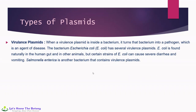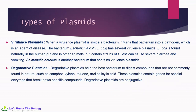Another type is virulence plasmids. When a virulence plasmid is inside a bacterium, it turns that bacterium into a pathogen — an agent of disease. The bacterium Escherichia coli has several virulence plasmids. E. coli is found naturally in the human gut and in other animals, but certain strains can cause severe diarrhea and vomiting. Salmonella enterica is another bacterium that contains virulence plasmids. Degradative plasmids help the host bacterium digest compounds not commonly found in nature, such as camphor, xylene, toluene, and salicylic acid.